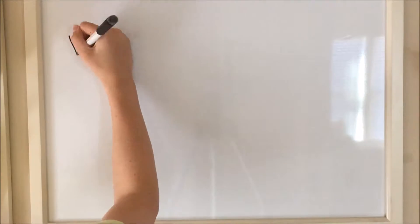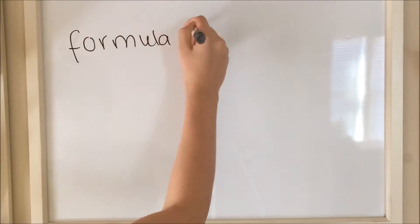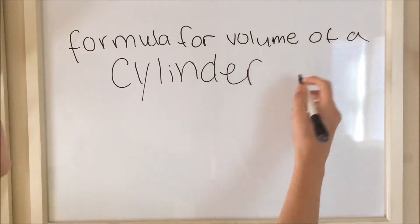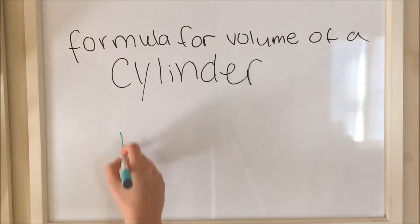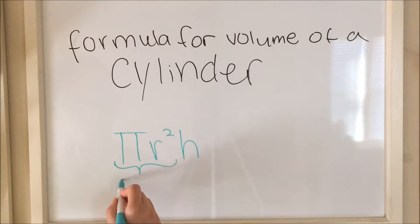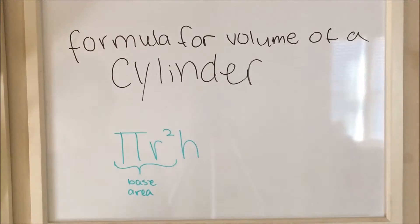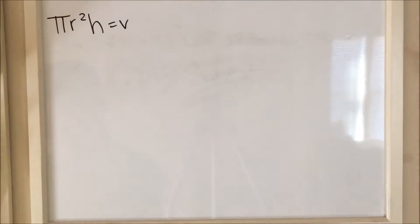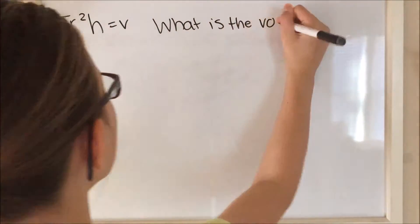This is the formula for the volume of a cylinder. It is πr² times the height. So πr² is basically the area of a circle times the height. I'm going to be showing you an example of how to find the volume of a cylinder.